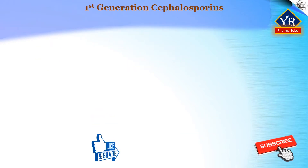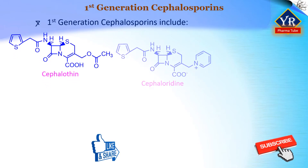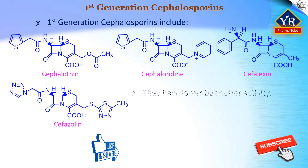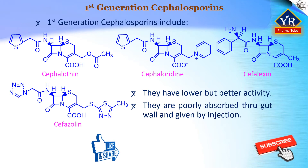First-generation cephalosporins include cephalothin, cephaloridine, cephalexin, and cefazolin. In general, they have a lower antibacterial activity as compared to penicillins, but they have a better or broader spectrum of activity. Most of these compounds are poorly absorbed through the gut wall and are given by injection. As with penicillins, the appearance of resistant microorganisms has posed a problem, particularly with gram-negative organisms.